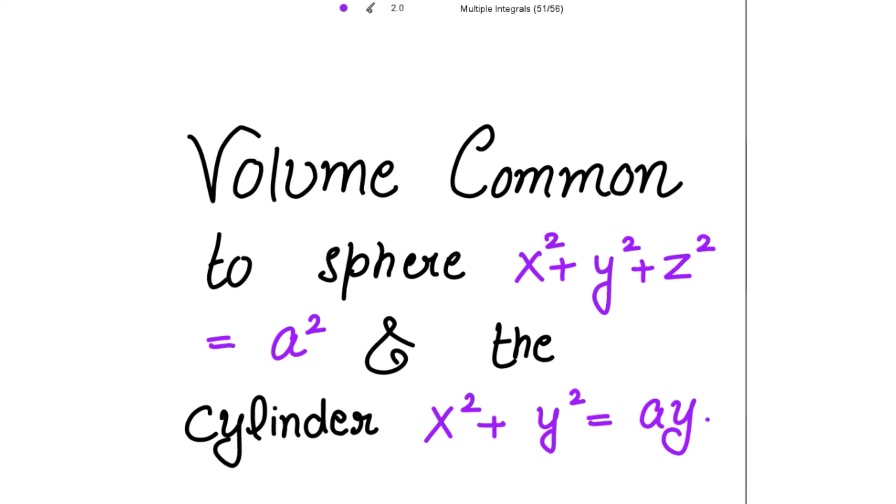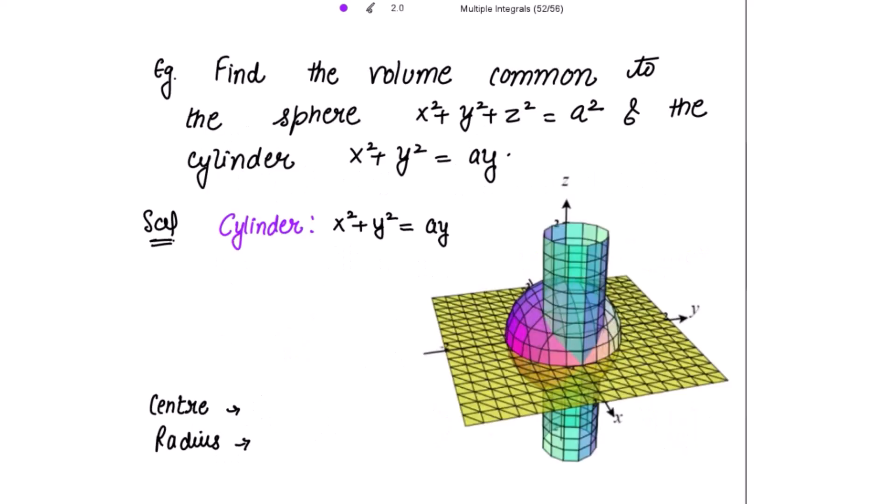We have to find the volume common to the sphere x² + y² + z² = a² and the cylinder x² + y² = ay.